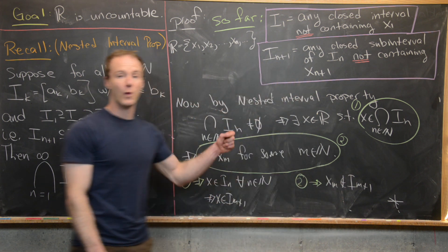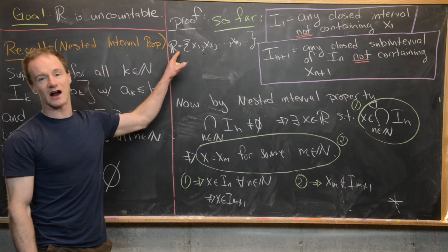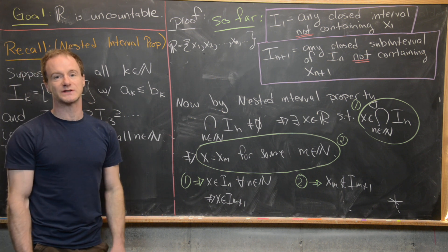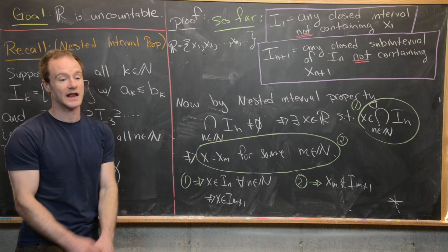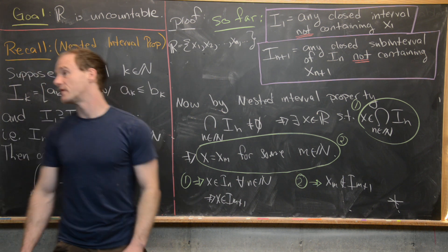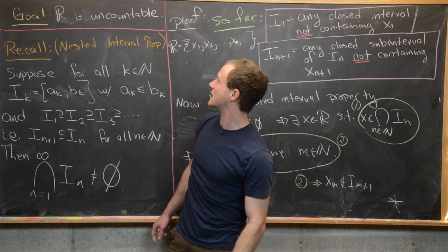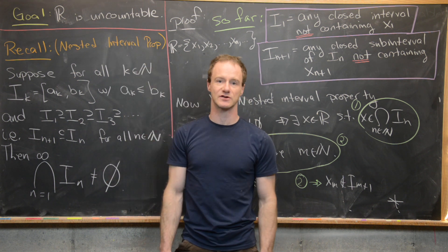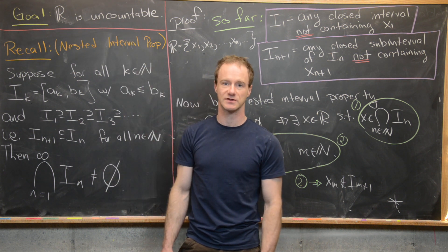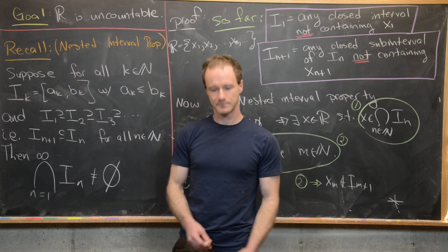We contradict our very first assumption, which was that the real numbers form a countable set. So we are left with the only possibility that R is not a countable set — in other words, it's uncountable. That's a good place to stop.